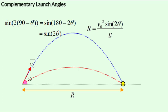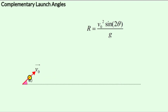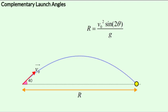But now let's try it out for another pair of angles. Now we launch the projectile at 40 degrees. Now what is the complementary angle to 40 degrees? It would be 90 minus 40 or 50 degrees.